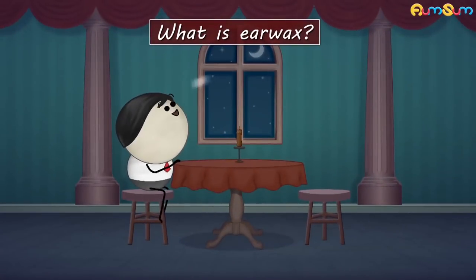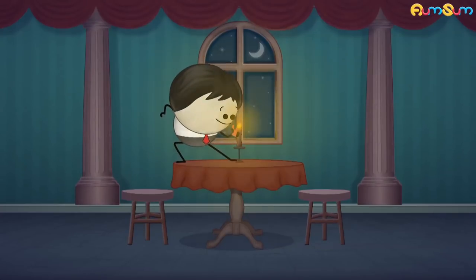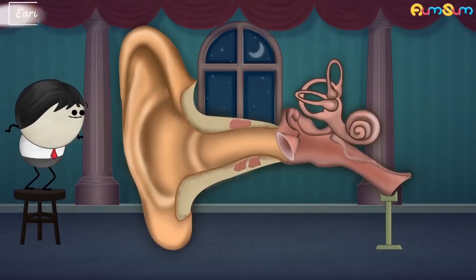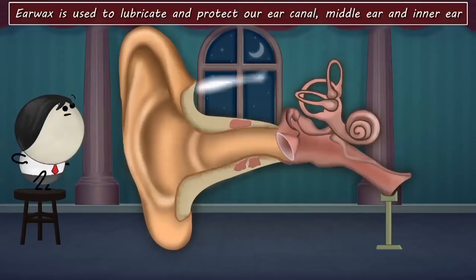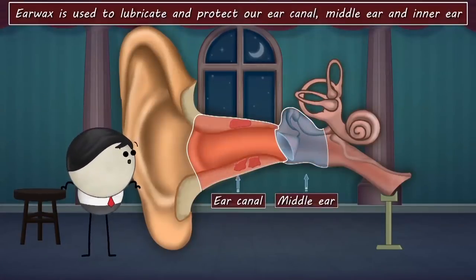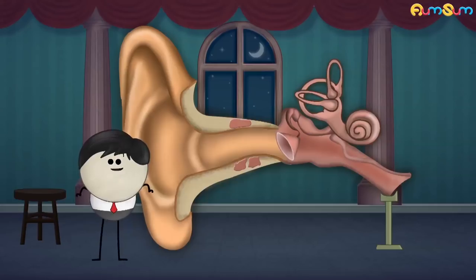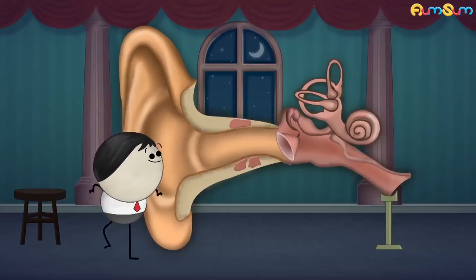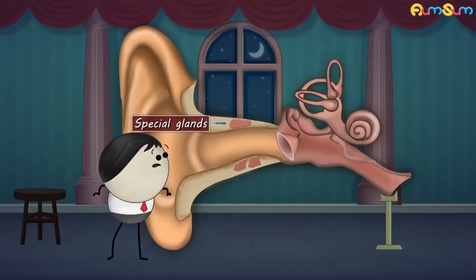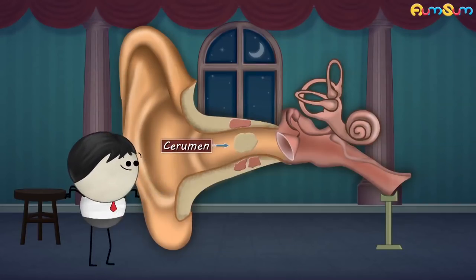What is ear wax? Ear wax is used to lubricate and protect our ear canal, middle ear, and inner ear. Our ear canal consists of special glands that produce an oily and waxy substance called cerumen.